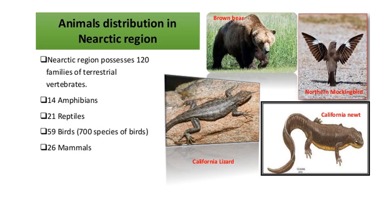Now we will discuss the faunal feature of the region. In this region, there are 120 families of terrestrial vertebrates present: 14 amphibian families, 21 reptilian families, 59 bird families, and 26 mammalian families.